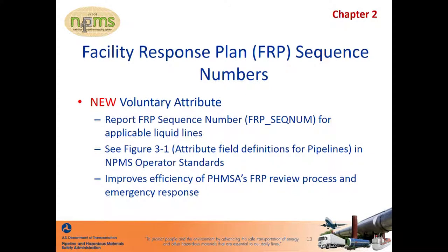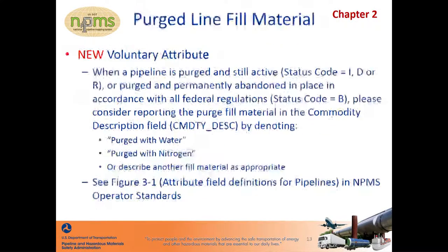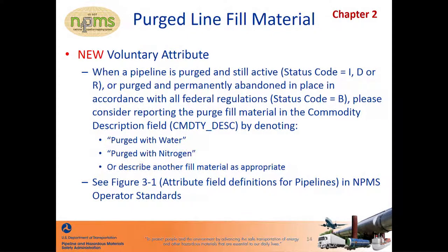If you are interested in improving FRP mapping, you can read about adding this attribute to your NPMS submission in Figure 3-1 from the Operator Standards. Also new in 2018, operators are encouraged to use the Commodity Description field to describe the fill material if a pipeline is purged. Often active pipelines that are subject to federal regulations are purged with water, nitrogen, or another fill material, and inspectors really value knowing this information. If you choose to include this information in your NPMS submission, it is one less piece of information an inspector may need to ask you for separately.